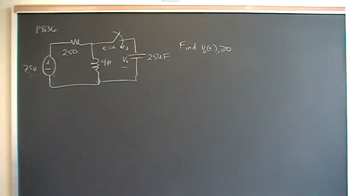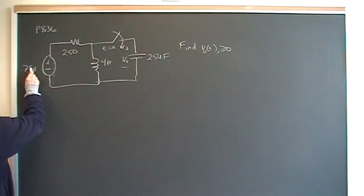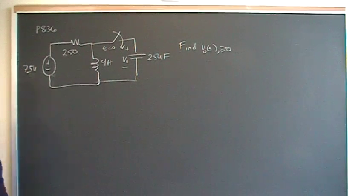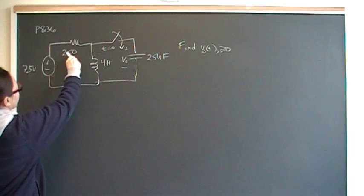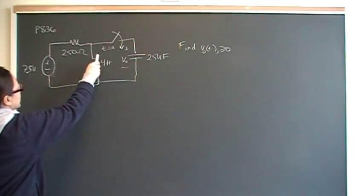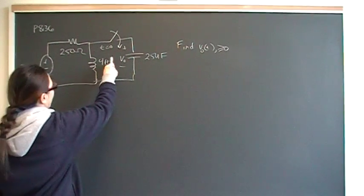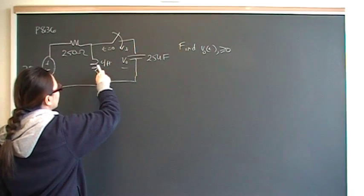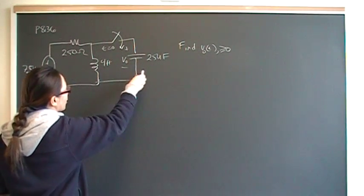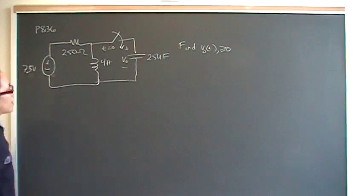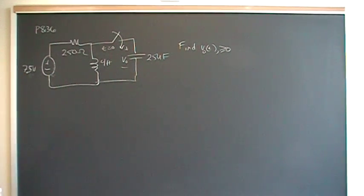This is problem 86 from chapter 8. You have a 7.5 volt infinite source connected in series with a 250 ohm resistor and a 4 henry inductor. The switch is open before time zero. You have a 25 microfarad capacitor, and we want to find the voltage drop across the capacitor after the switch closes.